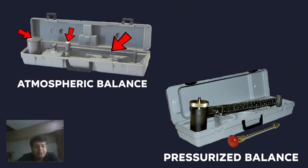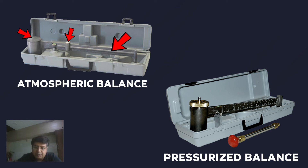When we use the atmospheric mud balance, it generally gives a mud weight on the lower side — the mud weight reading on this gauge will be less compared to the pressurized gauge.